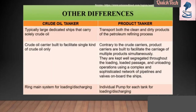Another difference is that crude oil tankers use a ring main system for loading and discharging, whereas most product tankers have an individual dedicated pump for each tank for loading and discharging.